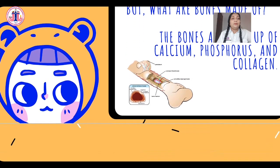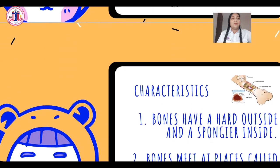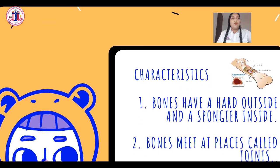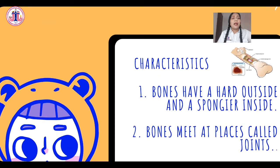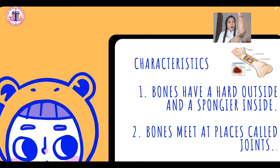What are the characteristics of the bones? Bones have a hard outside and spongier inside. Bones meet at places called joints — the part where your bones meet is called a joint, and it allows you to move.